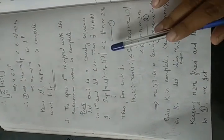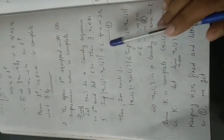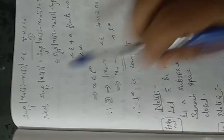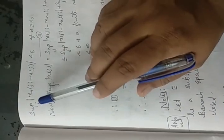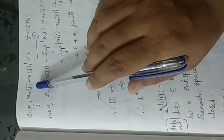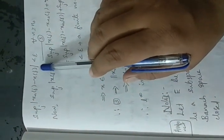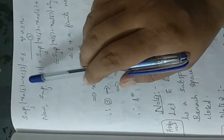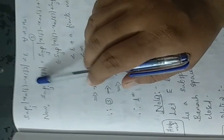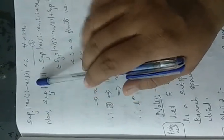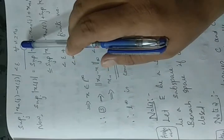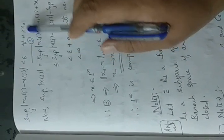In inequality number 1, we keep N fixed and let M tend to infinity. As M tends to infinity, Xm(j) tends to X(j). So we get: the supremum over j of |Xn(j) − X(j)| is less than ε for every N ≥ N₀.